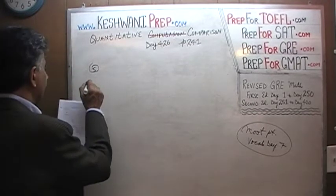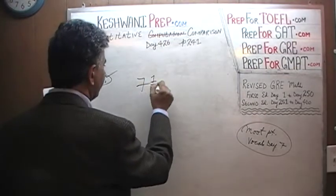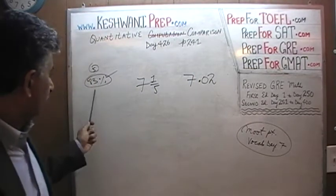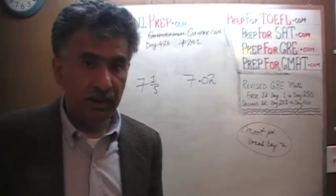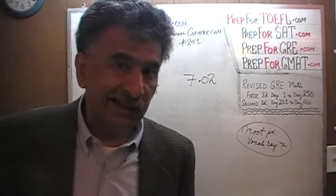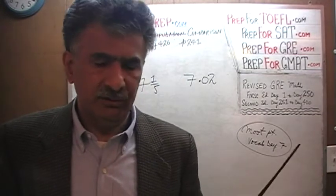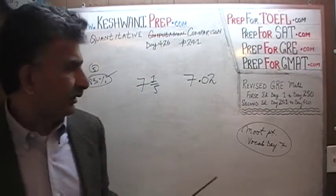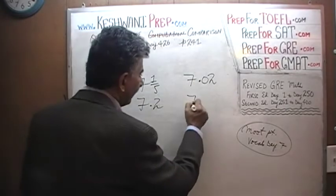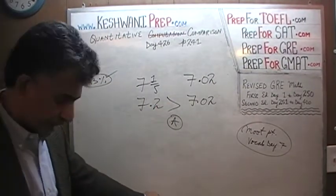Problem number 5 is a very straightforward, silly question — 83% of people had no problem with it. I want you to compare 7 and one-fifth versus 7.02. The reason the other 17% missed it is not because they couldn't do the math — it's because when problems are too simple, we get cocky and careless. We misread 7.02 as 7.2. But 7 and one-fifth is 7.2, and 7.2 is greater than 7.02. The answer is A. You must pay attention.